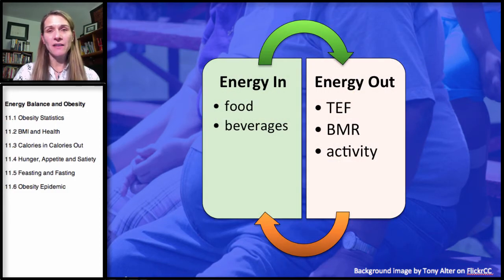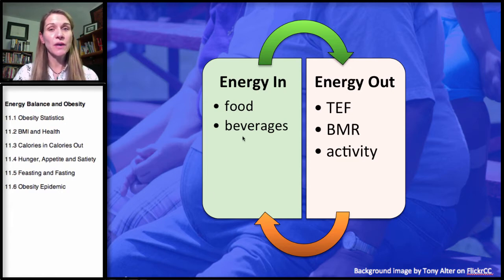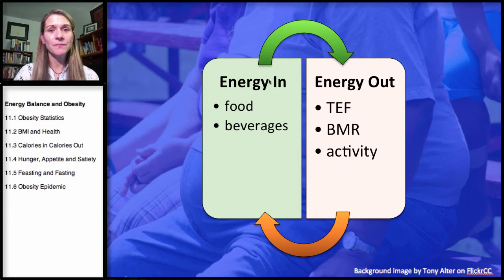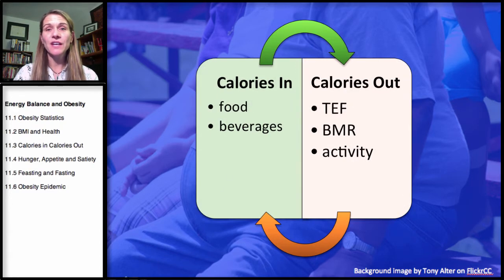The energy balance theory looks at the amount of energy from food and beverages going into our system and the amount of energy we expend — including the thermic effect of food, basal metabolic rate (BMR), and physical activity. When energy in and energy out are equal, our weight remains stable. So energy in and energy out is really calories in and calories out.